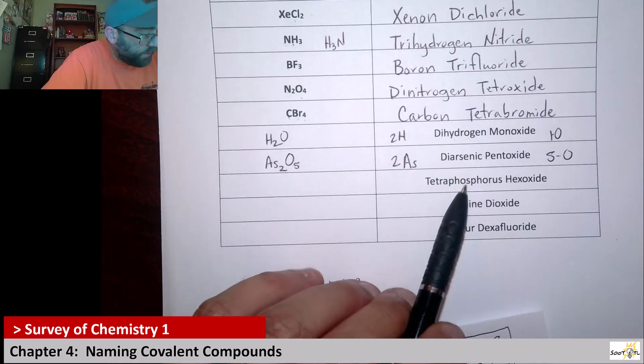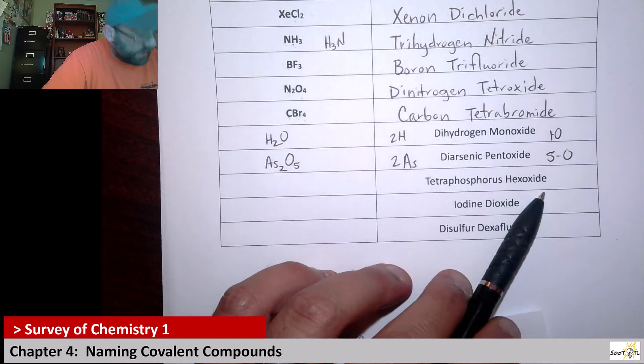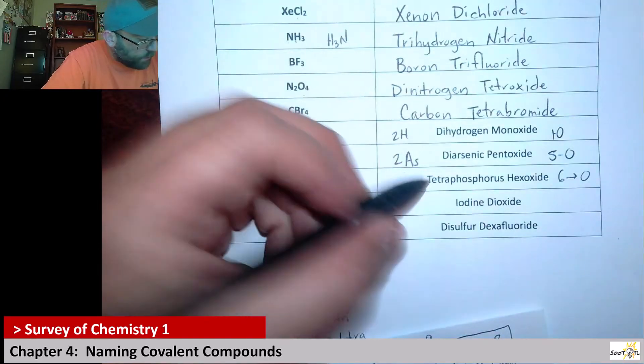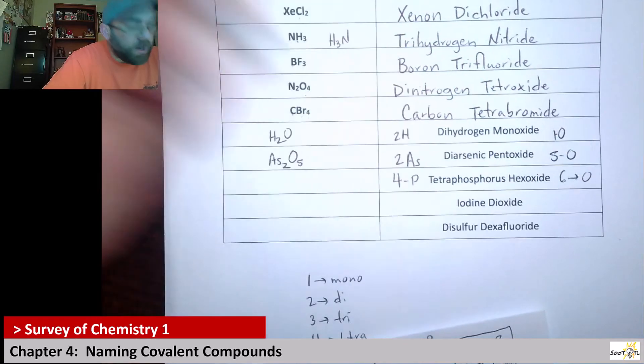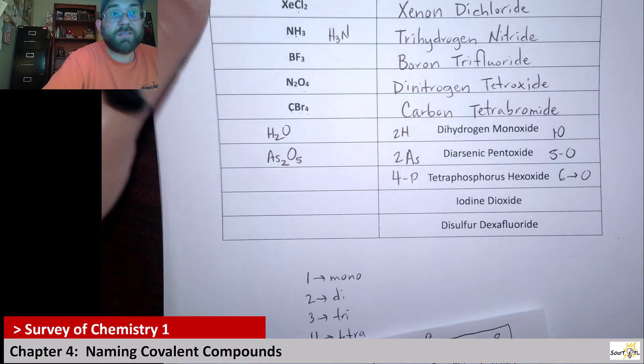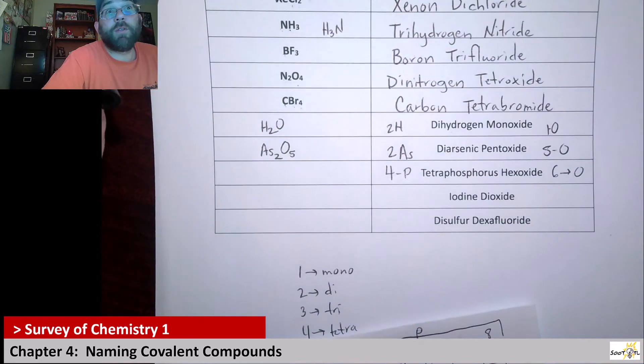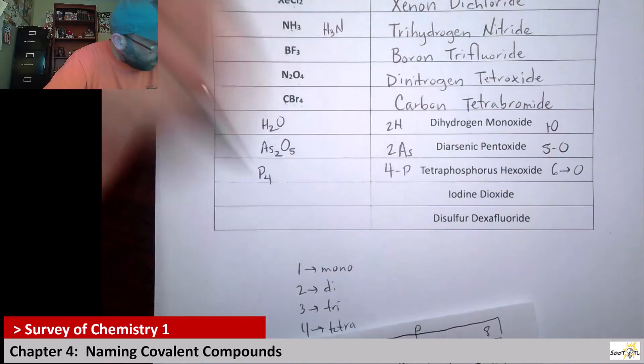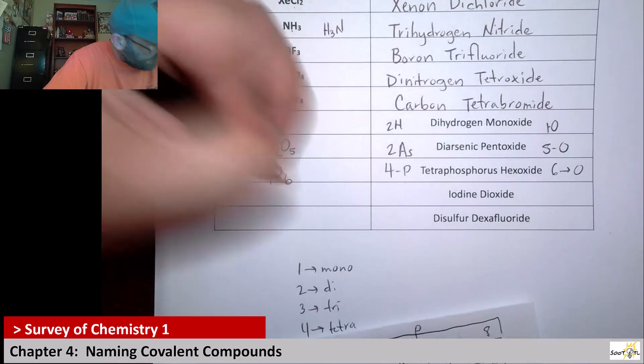Alright. Now we have tetraphosphorus hexoxide. So this would be six oxygens, and then this would be four phosphoruses. I don't know. I'm going to do it like octopi, you know. So phosphori. Alright. So it should be P4O6.